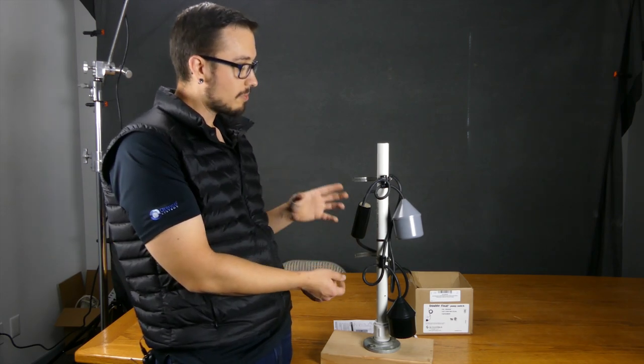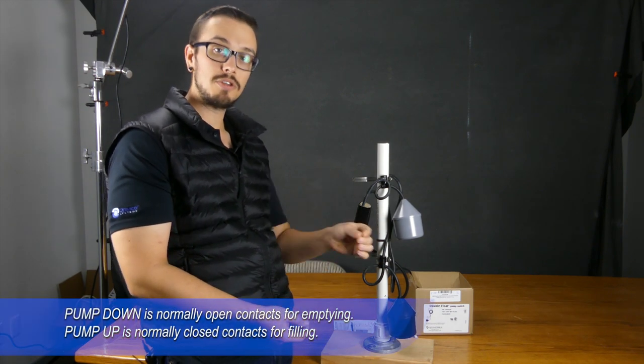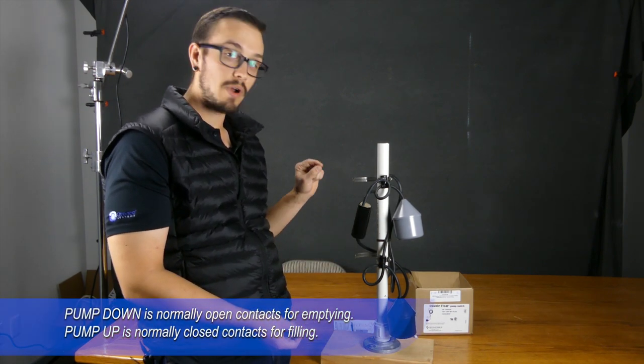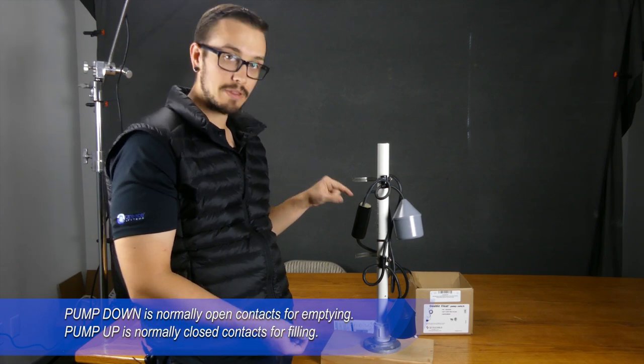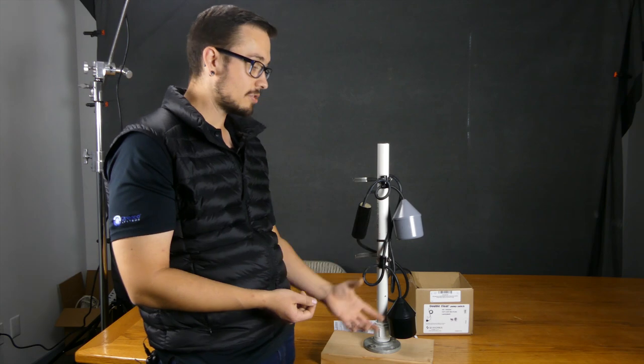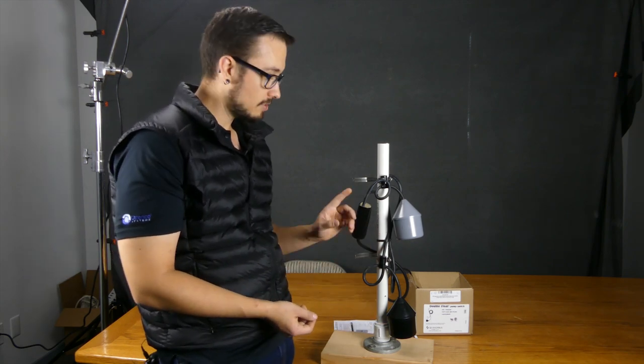That brings up another good point with these switches: you want to make sure you order the right configuration, pump up or pump down. But also just as critical is that you order the right voltage, because the way that this relay operates you have to have the right voltage. So you can't just grab a 120 volt configuration and use it in 230 volt and vice versa.